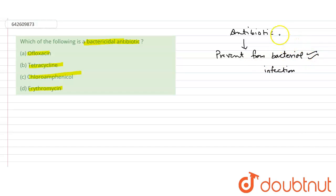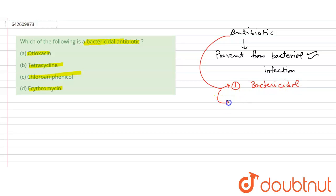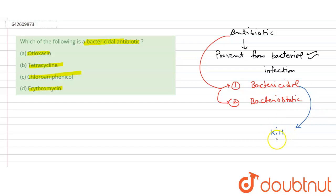Antibiotics are of two types. The first type is bactericidal, and the second type is bacteriostatic. In bactericidal antibiotics, these antibiotics kill the microbes.